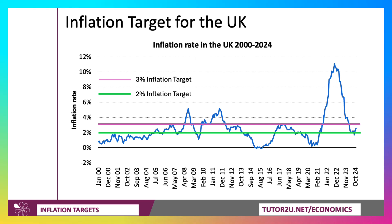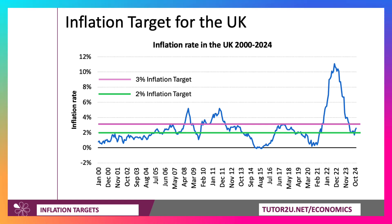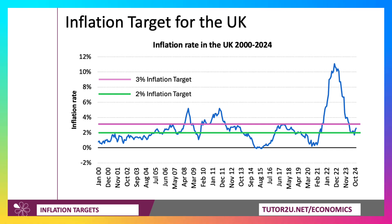There is some debate in economics about whether or not targets can and should be changed over time. The 2% target is what we have in the UK, and there's no obvious reason to change it at the moment. But for the purpose of illustration, let's say we decided that the Bank of England would set interest rates with a view to meeting a 3% inflation target. The key question is: would the inflation outcome be materially different with a 3% target compared to a 2% target?